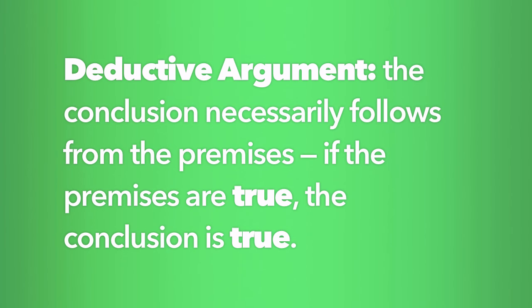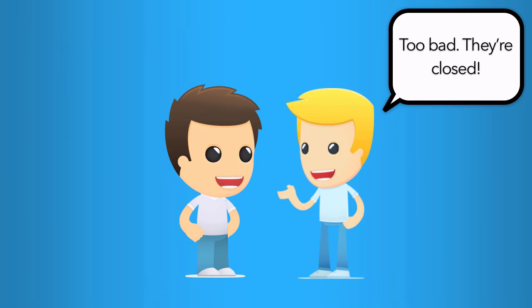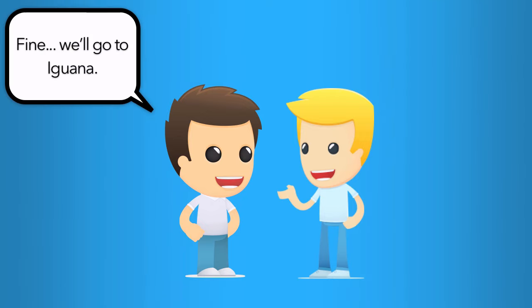A deductive argument is one in which the conclusion necessarily follows from the premises — if the premises are true, the conclusion is true. What if you don't like the conclusion? If you really wanted to go to Cafe Trang, it's too bad the premises don't support that conclusion. If the restaurant is indeed closed, you're out of luck. The conclusion that you should go to the Red Iguana in some ways states the obvious: if you only have two options and one of those options is closed, then it really goes without saying that you must go to the other one. It doesn't matter if you don't like the conclusion unless you can disprove one of the premises — you have no choice but to accept it.